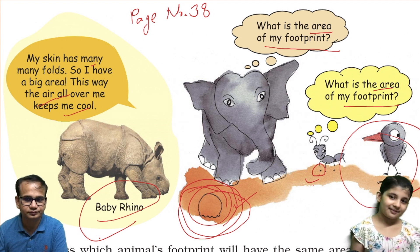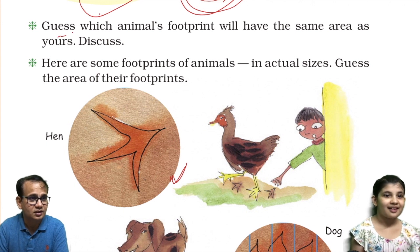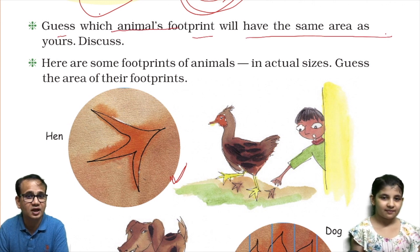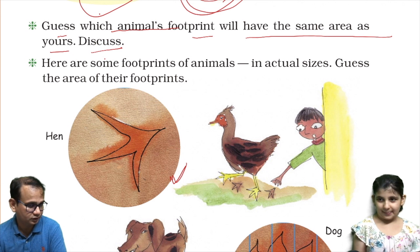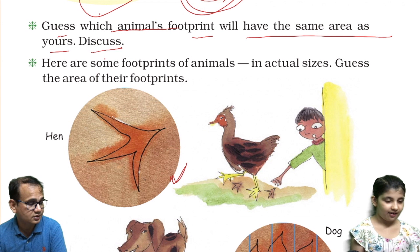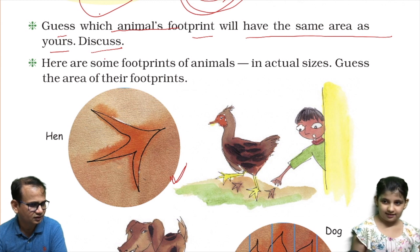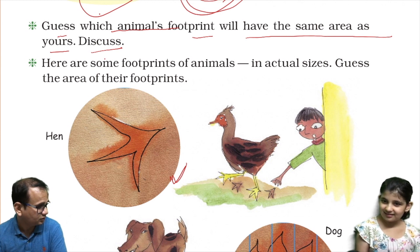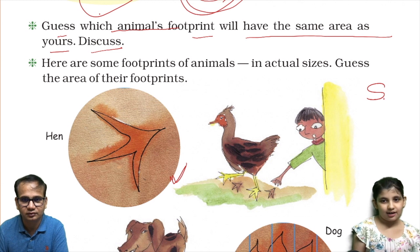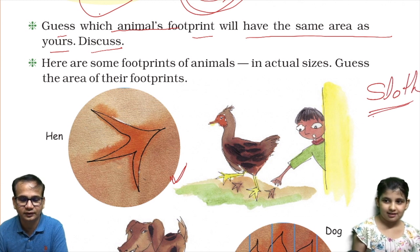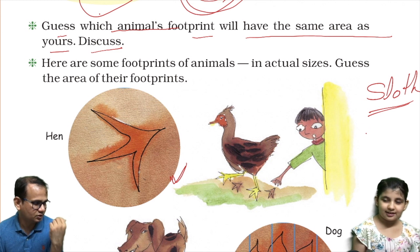Now let's read the activity: guess which animal's footprint will have the same area as yours — discuss. So tell me, you have your footprint, and which animal has the same area as your footprint? Avisha says 'sloth.' What is that animal? The teacher says she has not seen a sloth — it's not around us, so how will you measure or see its footprint?